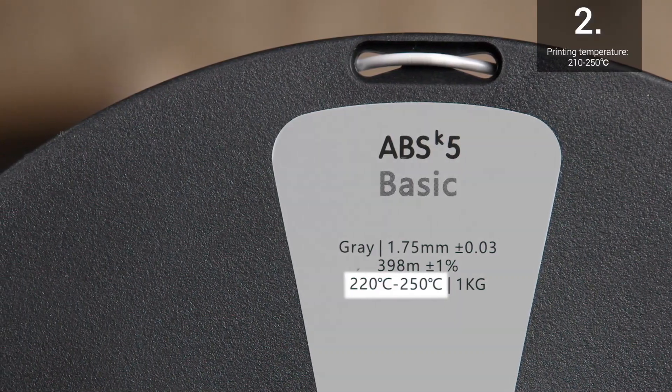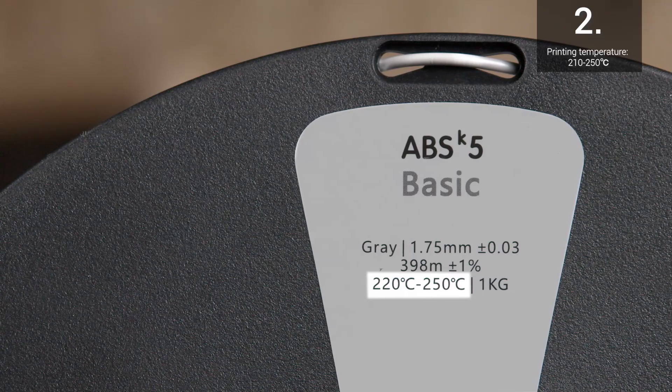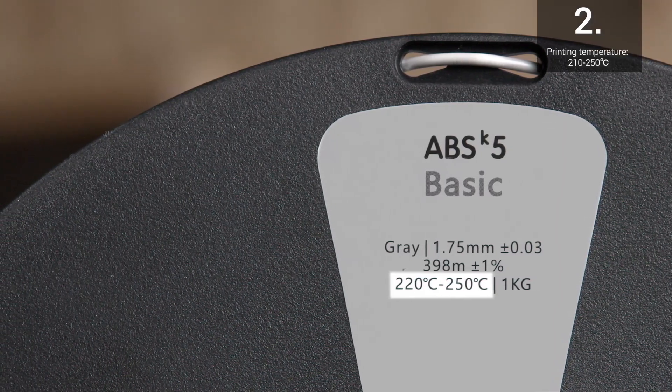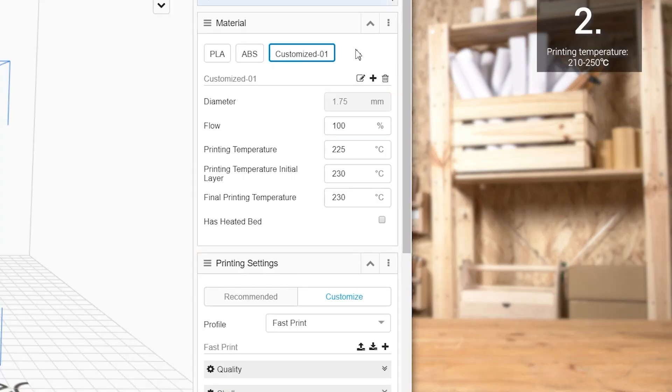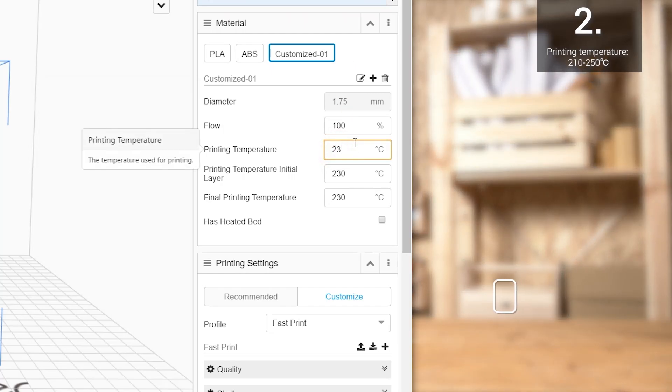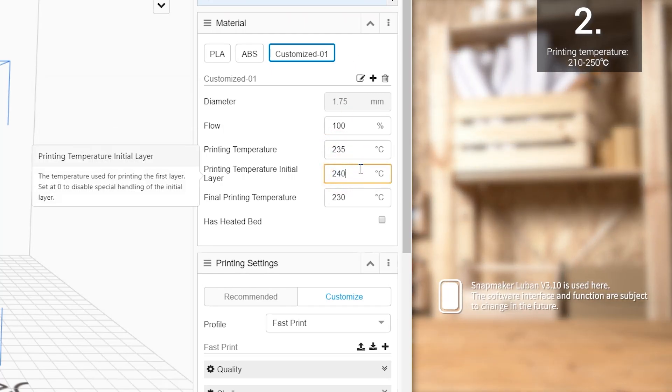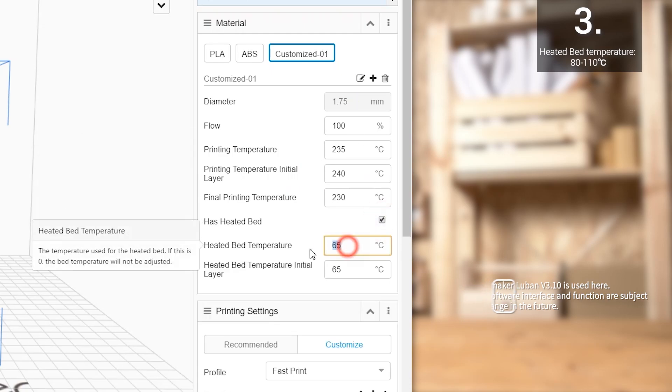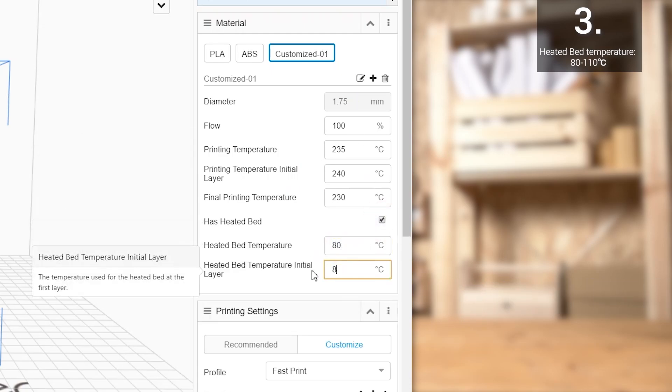Second, ABS must be printed at a higher temperature than PLA. You'll find a recommended temperature on most filament spools and boxes. If not, try setting it between 210 degrees Celsius and 250 degrees Celsius. Also, use a heated bed, and set the temperature at 80 degrees Celsius to 110 degrees Celsius.